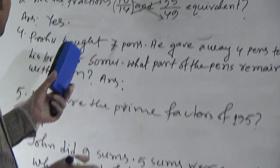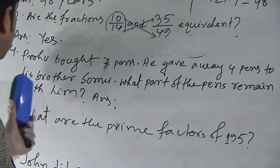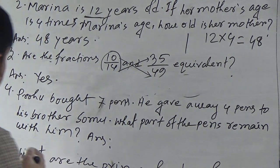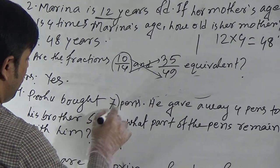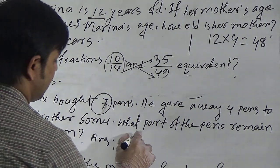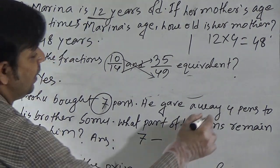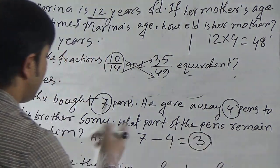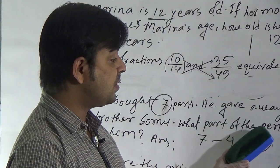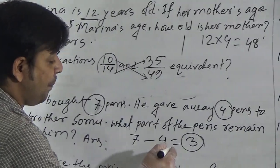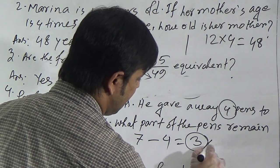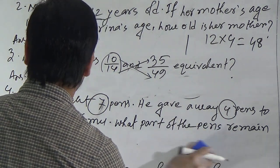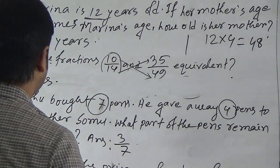Question 4: Prabhu bought seven pens. He gave away four pens to his brother Shumu. What part of the pens remain with him? We subtract 4 from 7 to get 3 pens remaining. We compare the remaining pens with the total, giving the fraction 3/7. Our required answer for question 4 is 3/7 part.